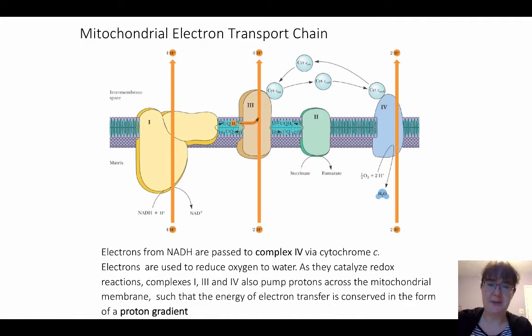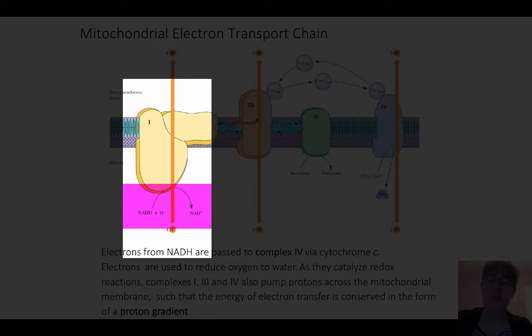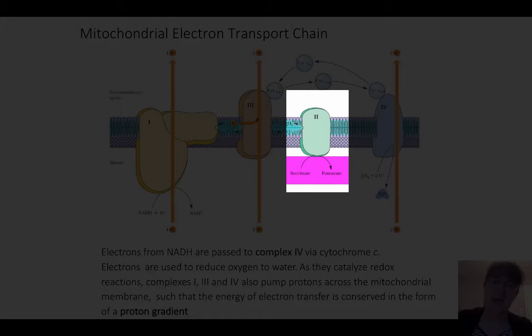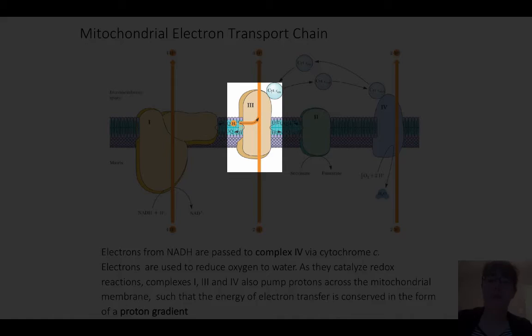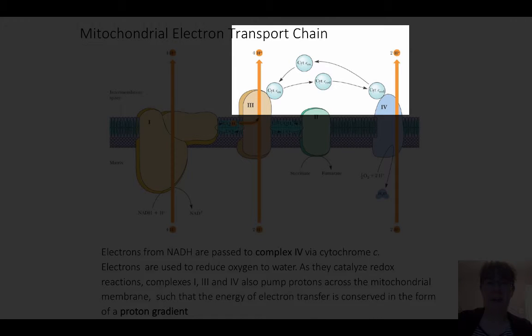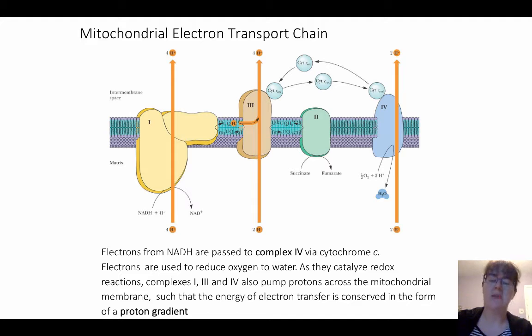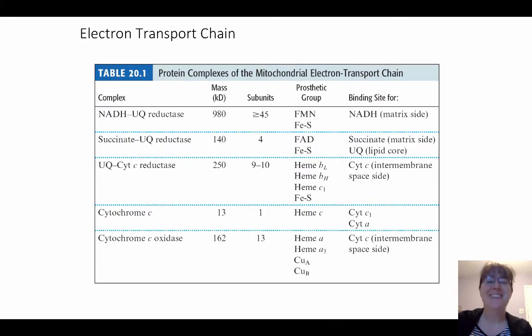In general what happens is electrons are going to be passed from a reaction, so in case of complex one that's NADH, in the case of complex two that's succinate, and those electrons are then going to be transferred to the ubiquinone pool. Once they're in the ubiquinone pool they're then going to be passed to complex three. Complex three will then pass the electrons to cytochrome c, which finally will pass the electrons to complex four. The end results of going from complex three to cytochrome c to complex four will be the same no matter what.